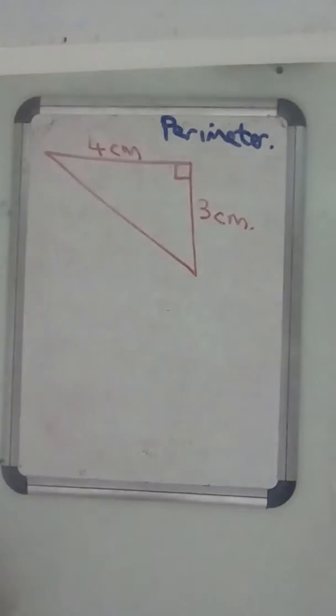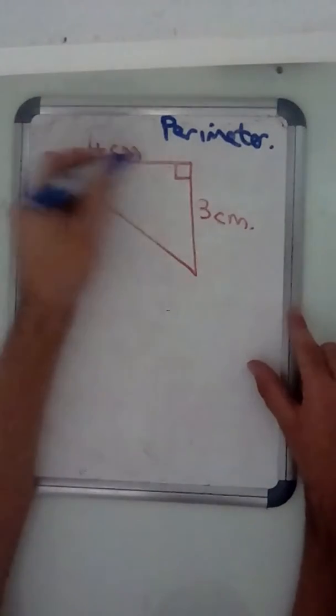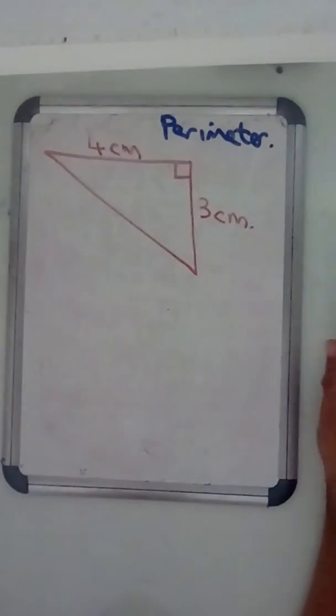Okay, second question. Again, you've been asked what is the perimeter of this triangle. So you've got one side, and you've got another side, and you don't have the third side.